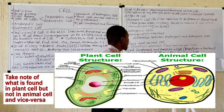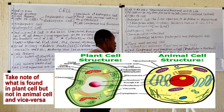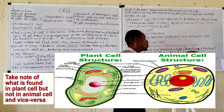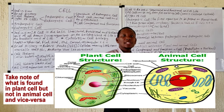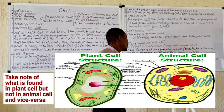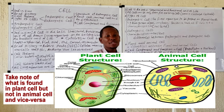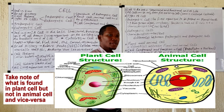The plant cell has a cell wall, while the animal cell lacks a cell wall. The plant cell possesses chloroplasts, while the animal cell does not. The plant cell has a large vacuole, while the animal cell may possess only a small vacuole or none at all. The plant cell lacks centrioles, while the animal cell possesses centrioles.